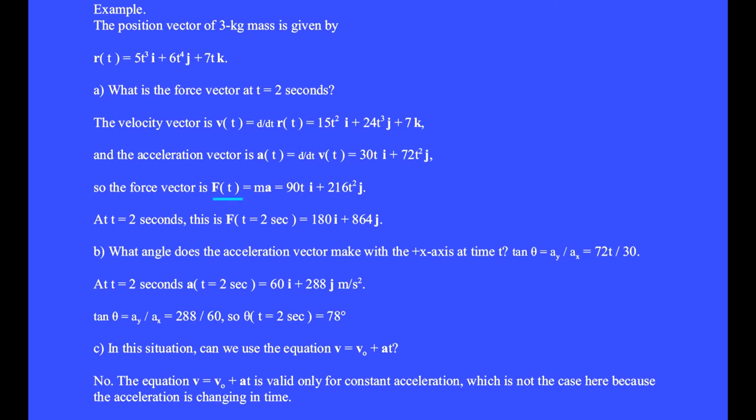The force vector, as a function of time, is mass times acceleration. The mass is 3 kilograms times 30t makes 90t i-hat and 216t² j-hat.